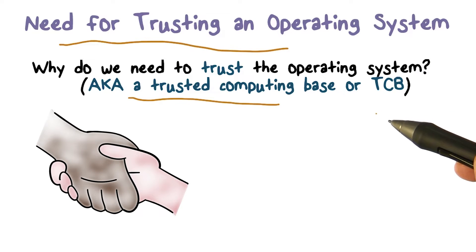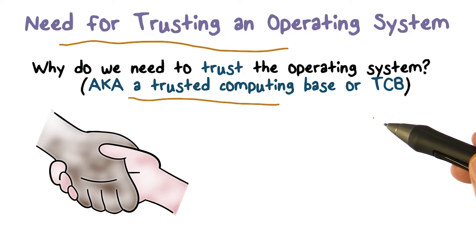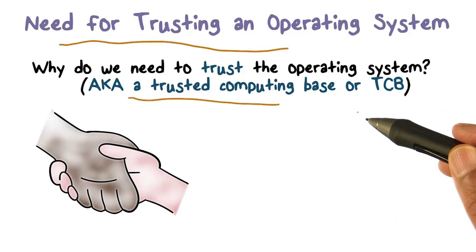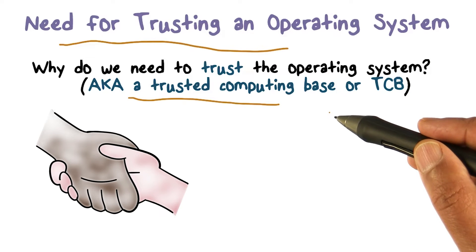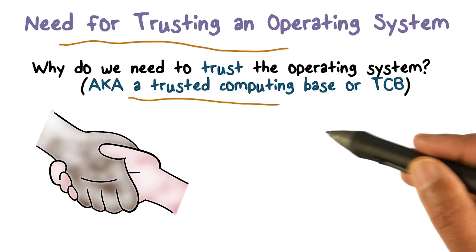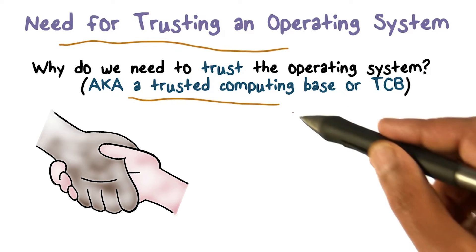The need to trust the operating system comes from the fact that we're giving it the keys to the kingdom. Keys to the kingdom here are direct control of all the physical resources. The operating system is able to access anything that we have, and it's the OS's job to make sure that these resources get accessed by the correct users or correct applications in the system.